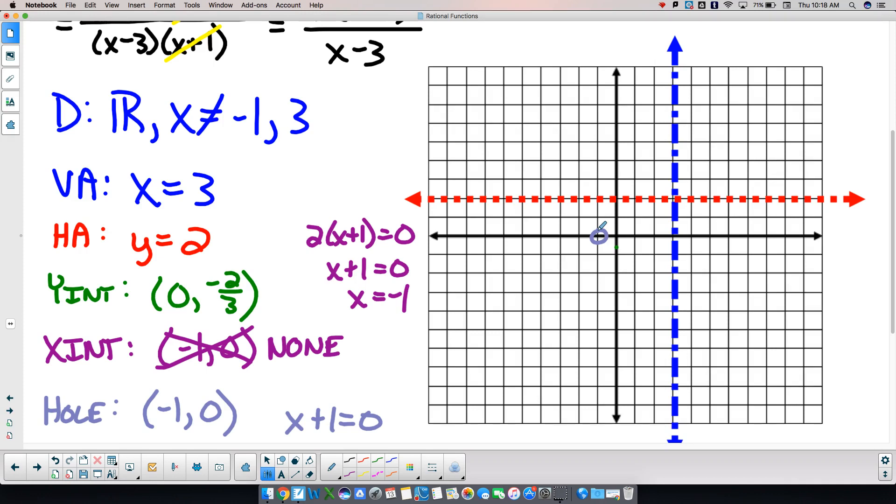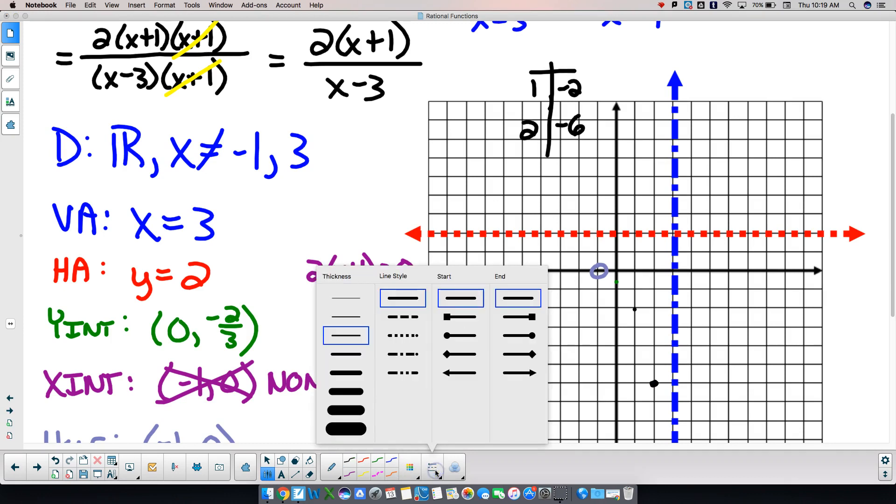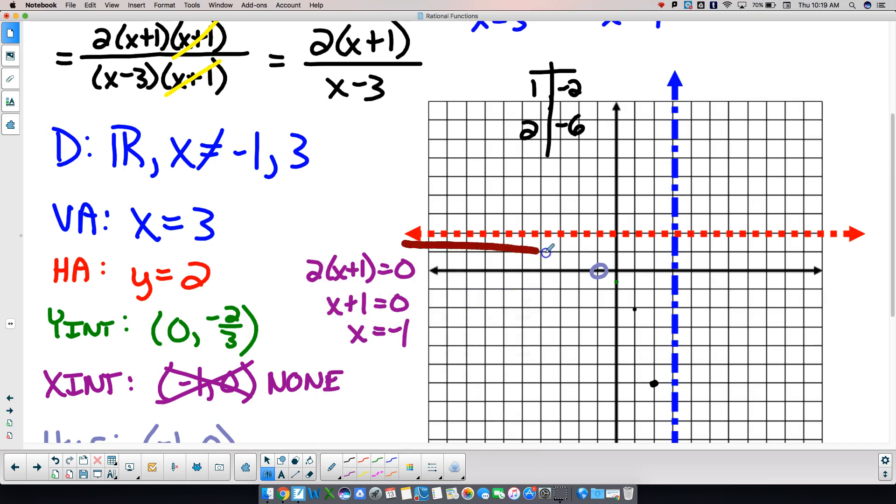And then we just got to fill in now with some points. So if I go with positive 1, and I put that in there, 1 plus 1 is 2, times 2 is 4. 1 minus 3 is negative 2. So 4 divided by negative 2 is negative 2. If I put in 2, 2 plus 1 is 3, times 2 is 6. 2 minus 3 is negative 1, so that's negative 6. So that should give me enough over here to come in, lift up, and go down.